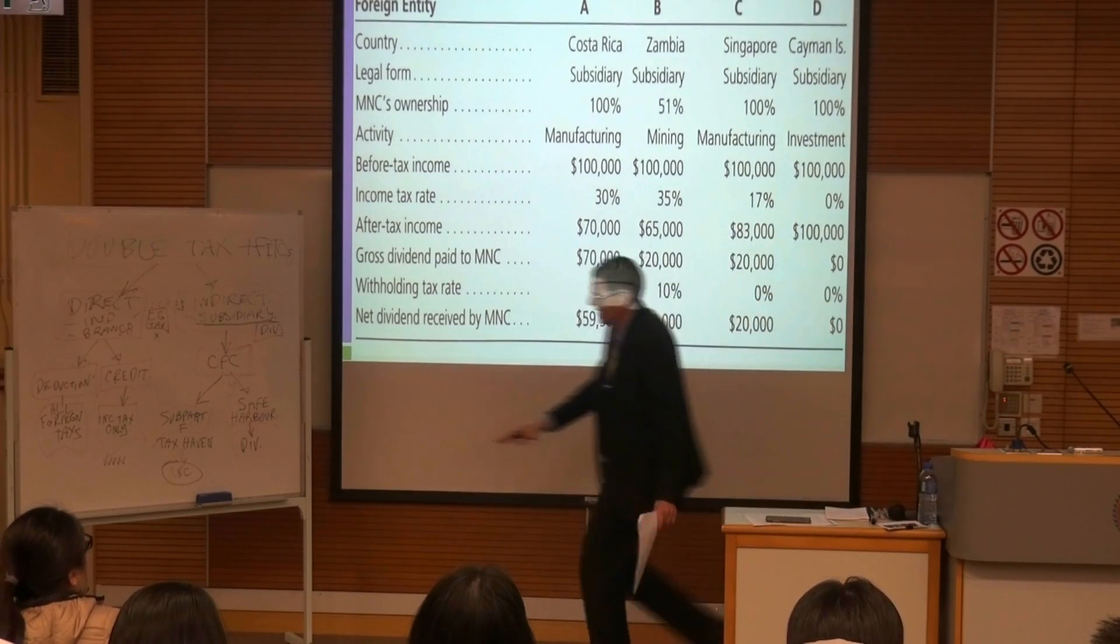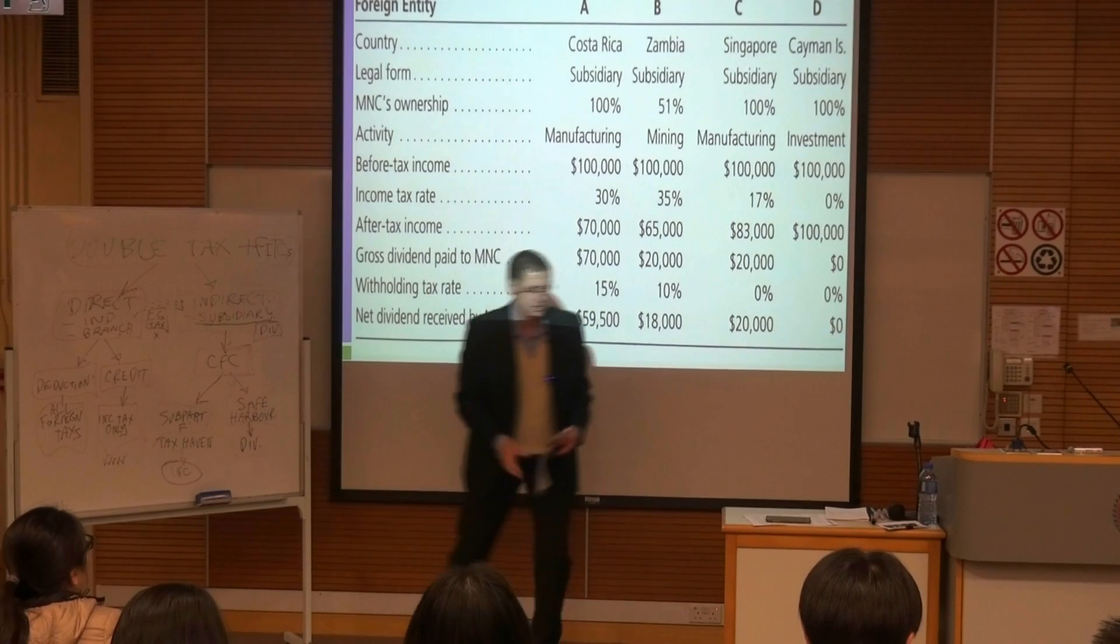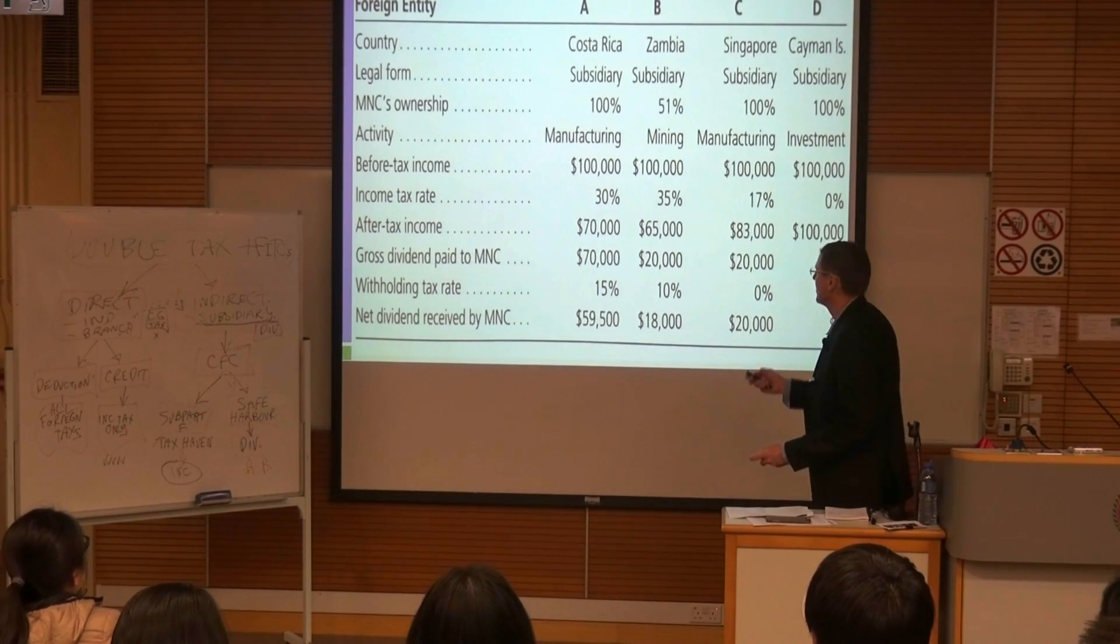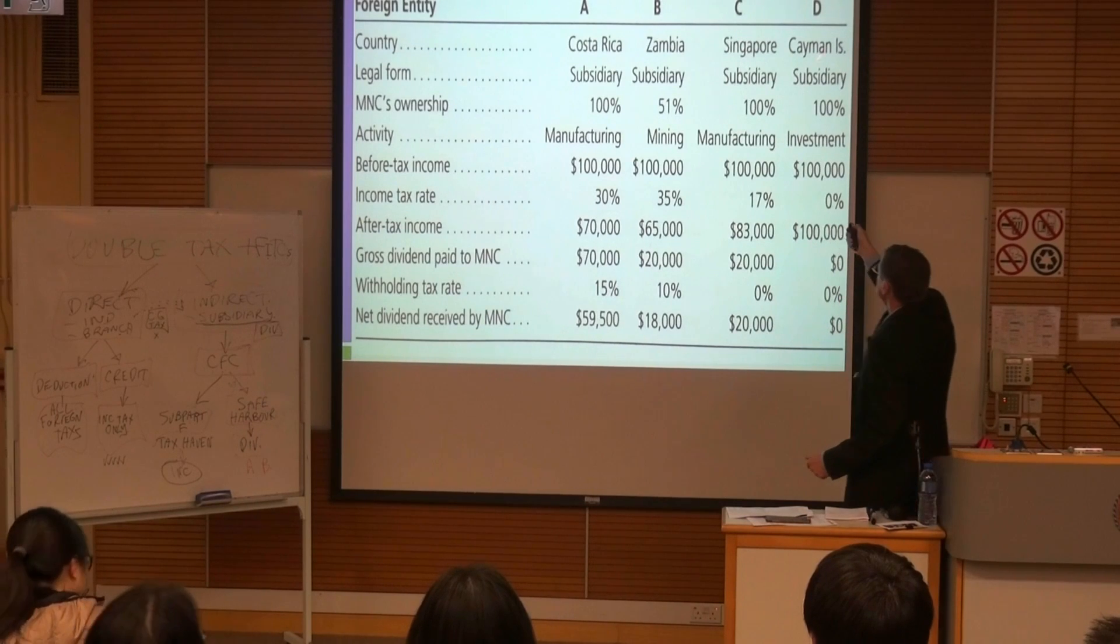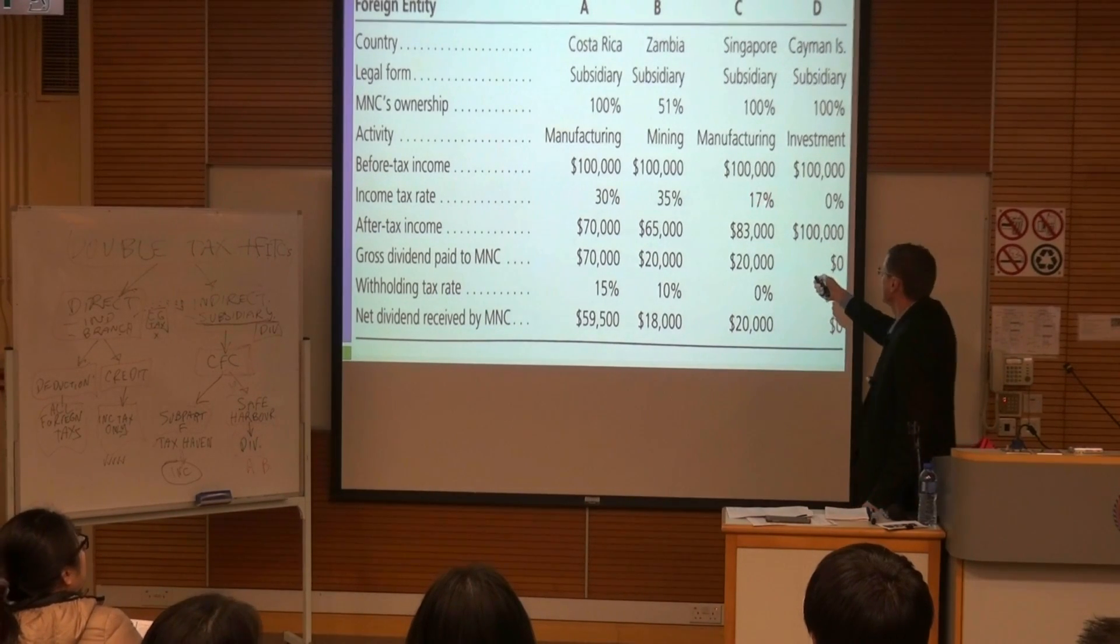A and B are down here in the safe harbor. What about C and D? Singapore doesn't meet the 90% of the US tax rule but we're doing manufacturing, so safe harbor.